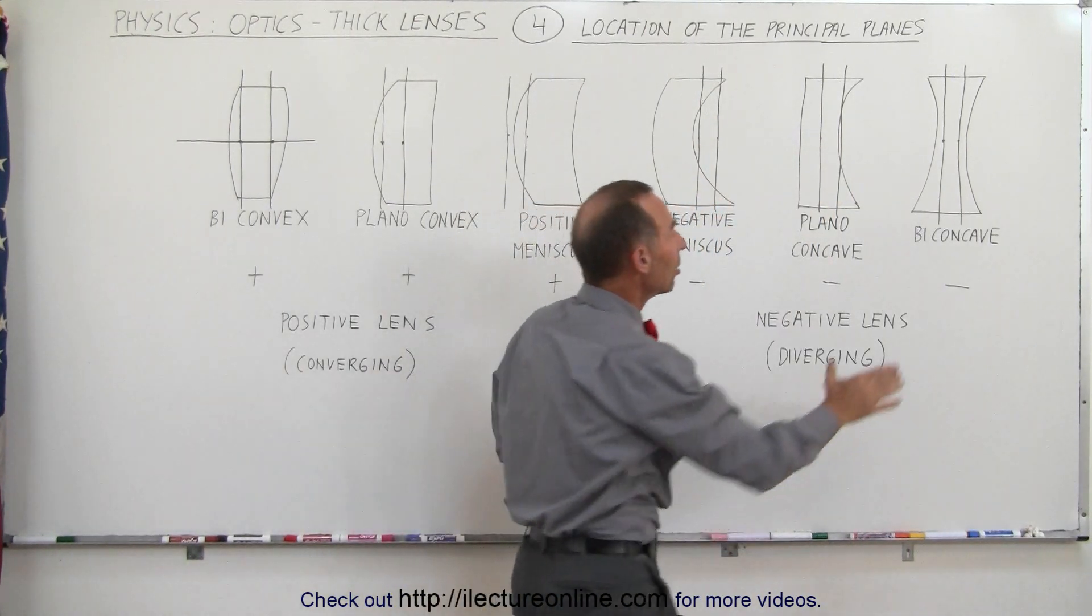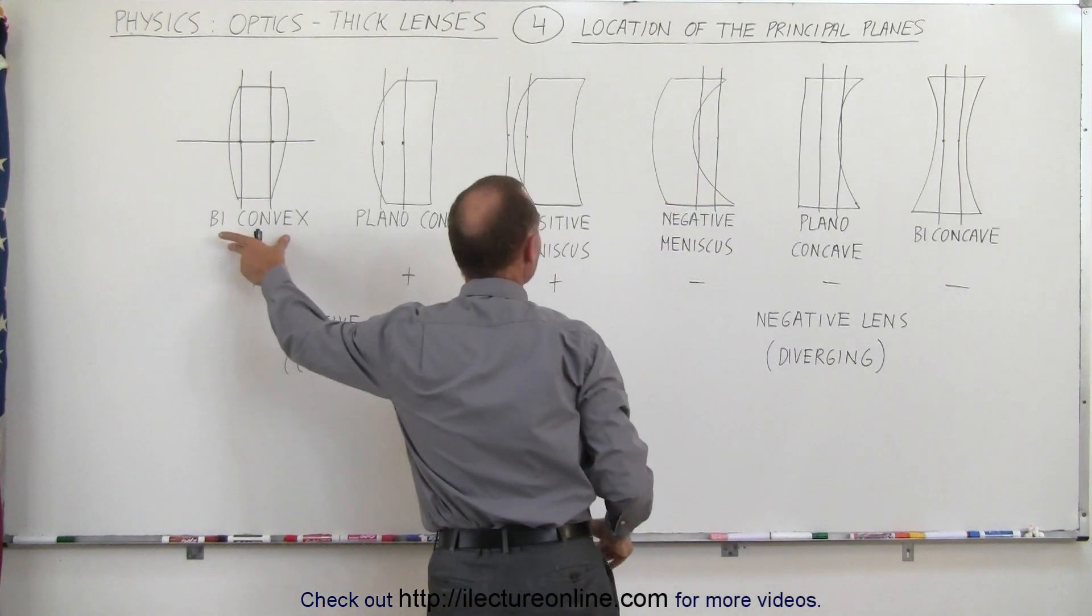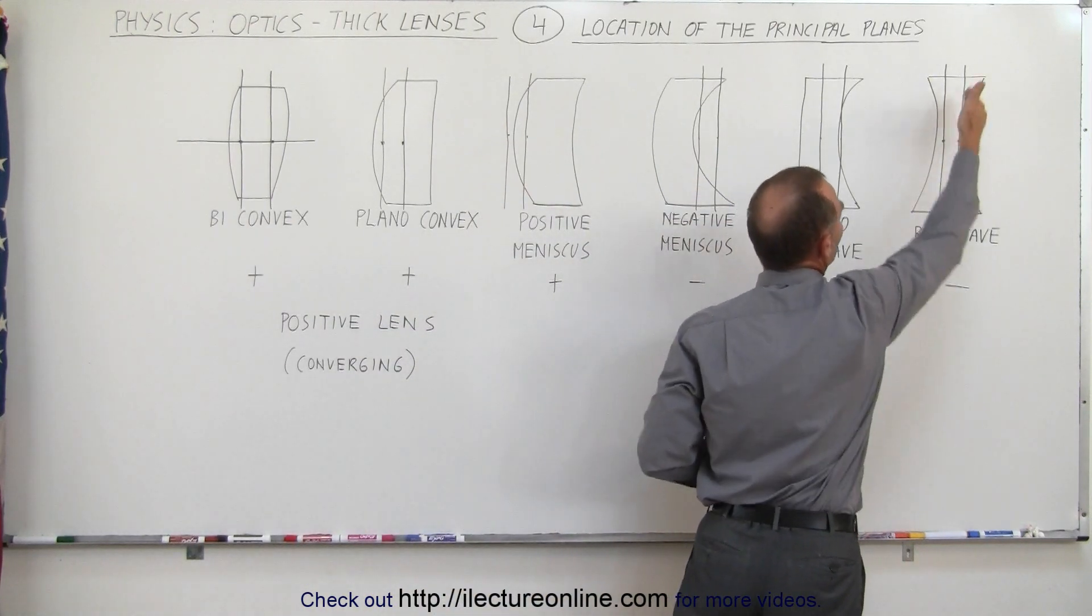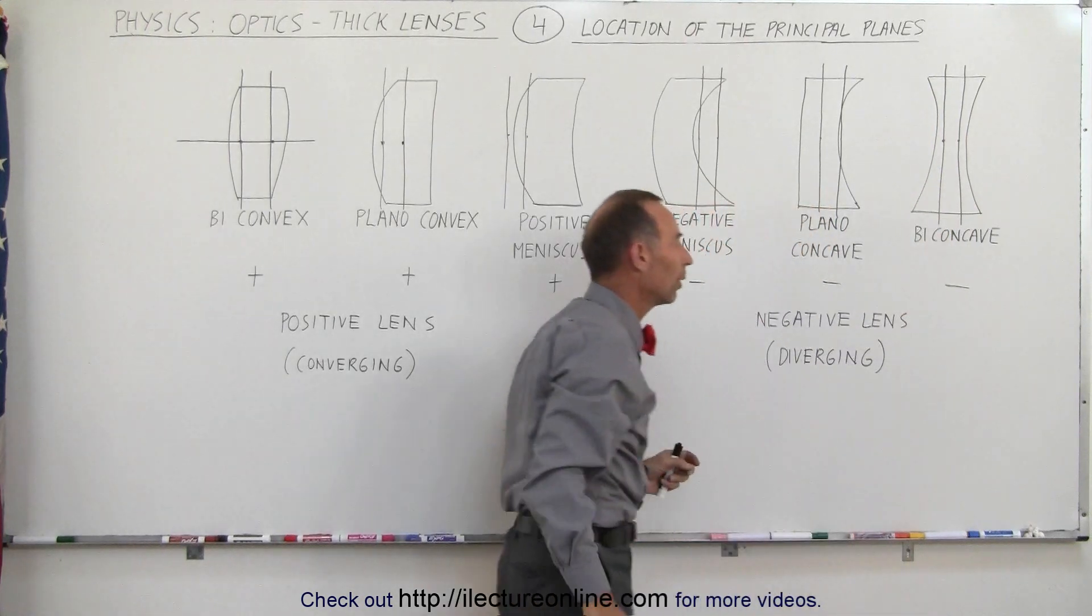In the case of a biconcave lens, just like in a biconvex lens, there'll be a lot of symmetry if both curvatures on both sides of the lens are equal to one another.